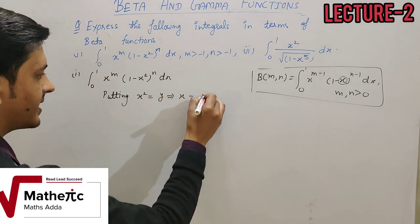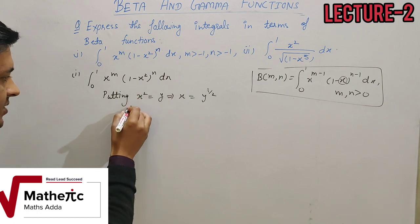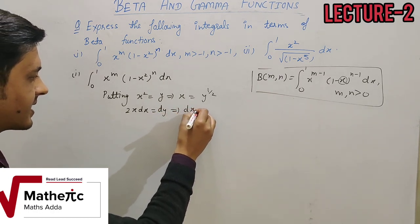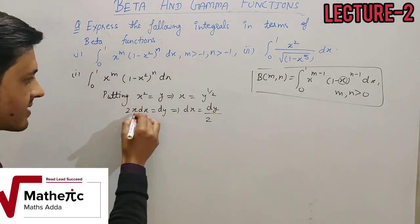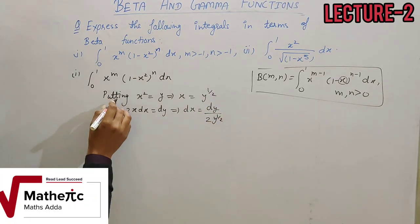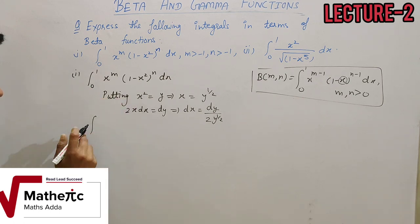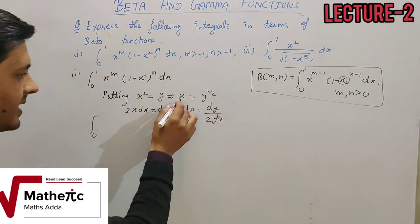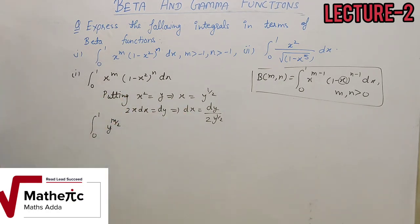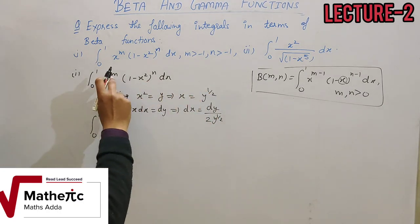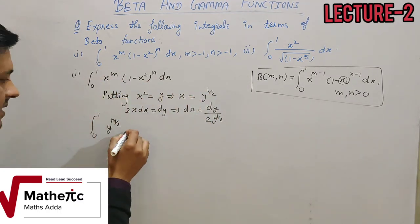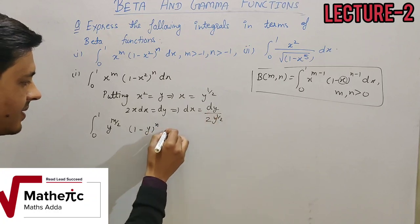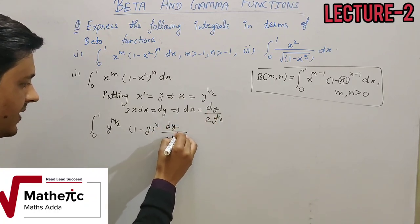So x = y^(1/2). Differentiating: dx = dy / (2x). The lower limit x = 0 gives y = 0, and the upper limit x = 1 gives y = 1. So x^m becomes y^(m/2), since we replace x with y^(1/2) raised to the power m. And (1-x²) becomes (1-y), with dx replaced by dy / (2y^(1/2)).